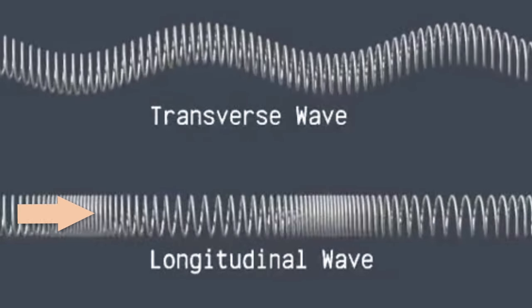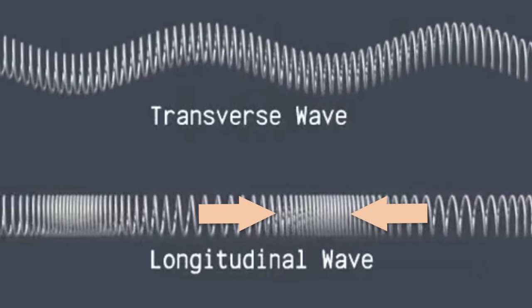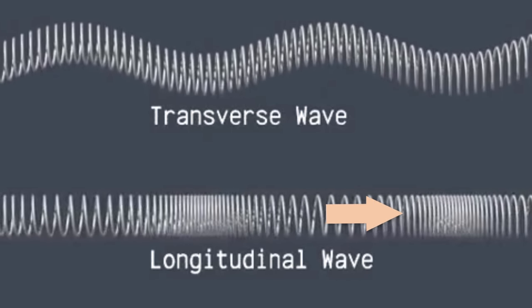The P waves are faster because being longitudinal, they oscillate in the direction that they're headed. So with no wasted movement, these waves arrive first at the seismograph.